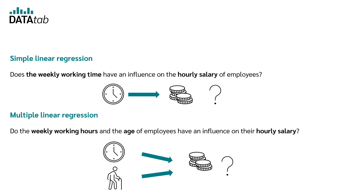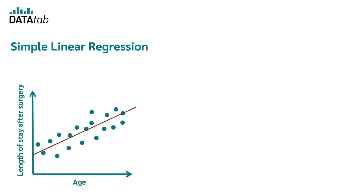As you already know, a regression analysis allows you to infer or predict a variable based on one or more other variables. The goal of simple linear regression is to predict the value of a dependent variable based on an independent variable. The greater the linear relationship between the two variables, the more accurate the prediction. Visually, this relationship can be represented in a scatter plot — the stronger the linear relationship, the more the data points lie on a straight line. The task of simple linear regression is to determine the straight line that best describes this relationship.